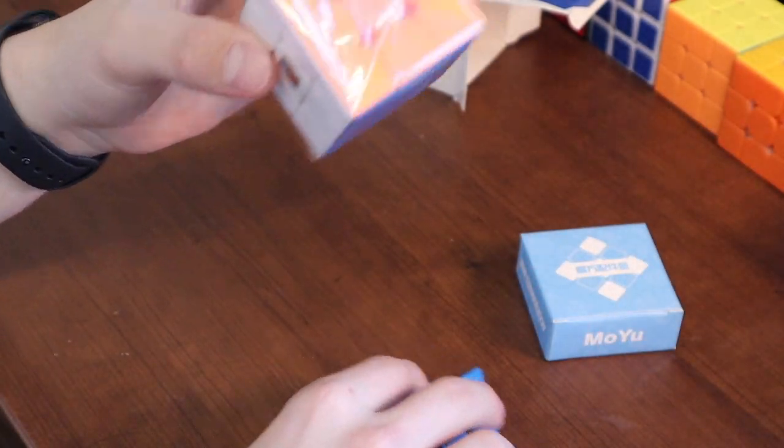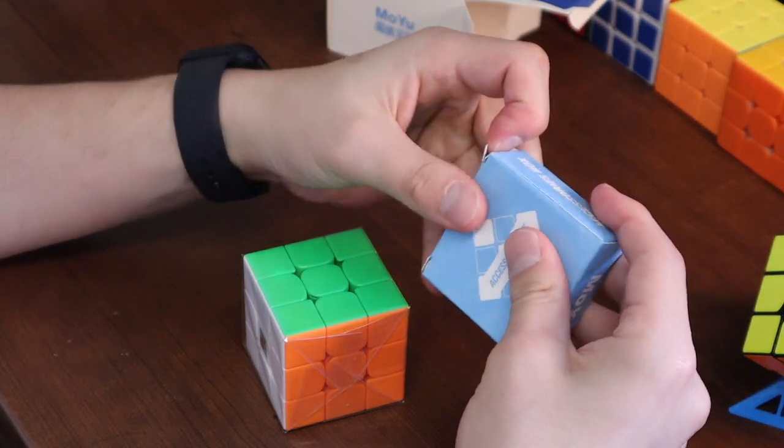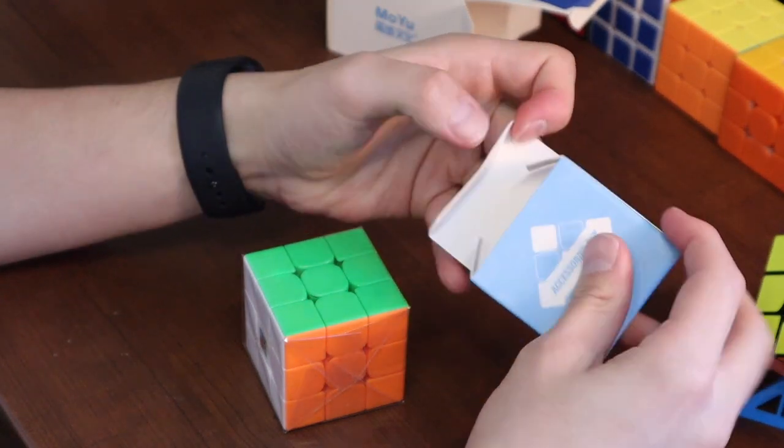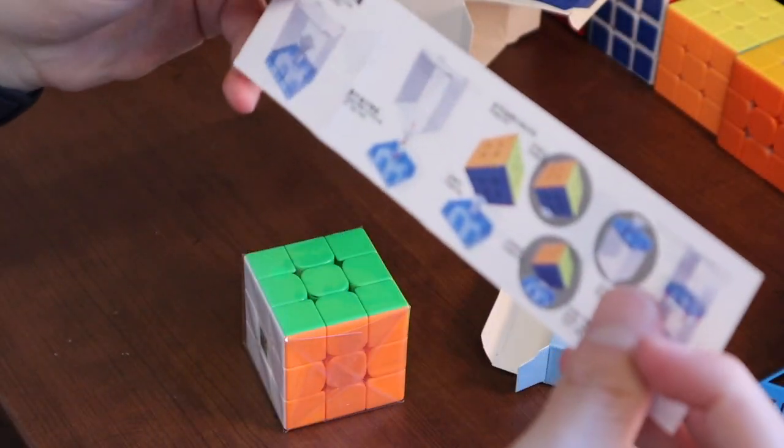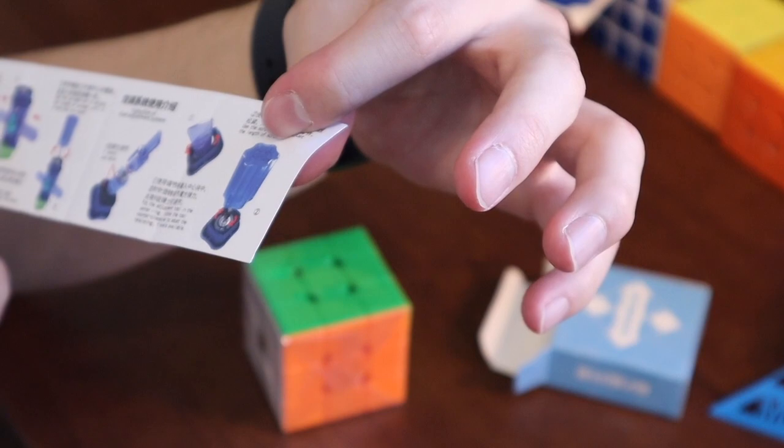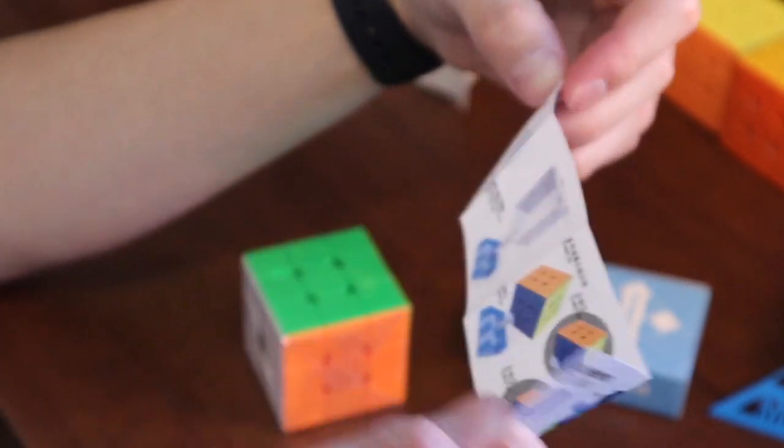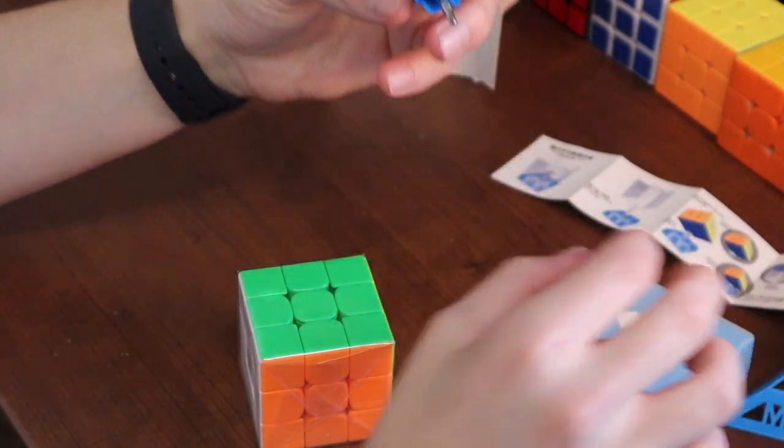And then here's the cube. Let's check out what's in this first before we get into the cube. We got this, not too sure what this does. It looks like it explains how to change the screws and then tighten everything on the cube. Oh yeah, check it out, little screwdriver that comes with it so you can change it as well.